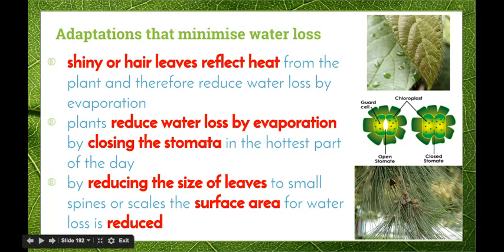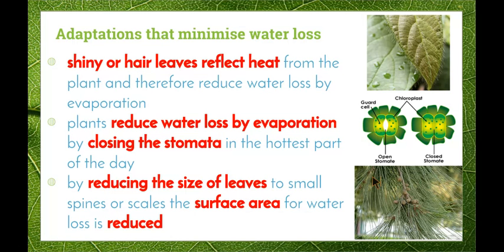Here we have a casuarina with pine needle-like leaves. These are actually individual leaves, and by reducing the surface area available for water loss, the plant is able to retain as much water as possible.